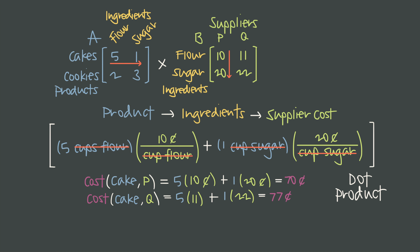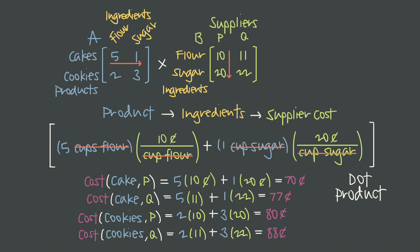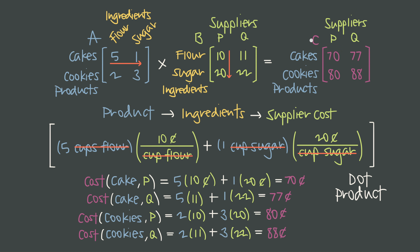What we just did was calculate what's called a dot product, which is the sum of these two different products. The dot product is what we'll use every time to multiply a row in matrix A by a column in matrix B — this is our row-by-column matrix multiplication rule. We can also use it to find the cost of a cake from supplier Q, the cost of cookies from supplier P, and the cost of cookies from supplier Q. Putting these four answers into a new matrix C, which represents total cost for each product from each supplier, gives us our result. Notice how we started from products, chained through ingredients, and arrived at suppliers — and in the resulting matrix, the ingredients cancel out, letting us go straight from products directly to suppliers.